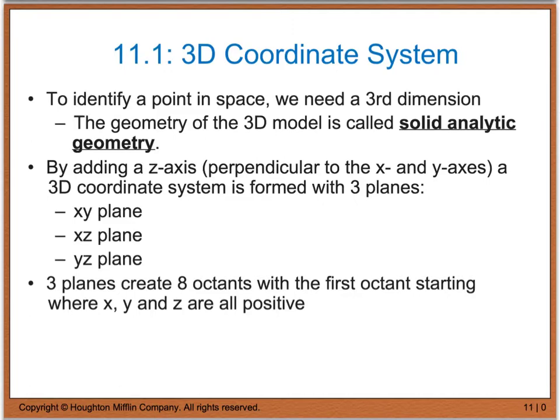We're going to do this by adding what we call a z-axis, and this z-axis will go perpendicular to the x and y-axes. When we do this, and I will show you pictures of these here in just one second, we are going to form an xy plane, an xz plane, and a yz plane. These three planes will create eight octants, and the first octant will start where x, y, and z are all positive. Then we're going to rotate around in a counterclockwise direction, just like we would as if we were looking at a two-dimensional coordinate plane.